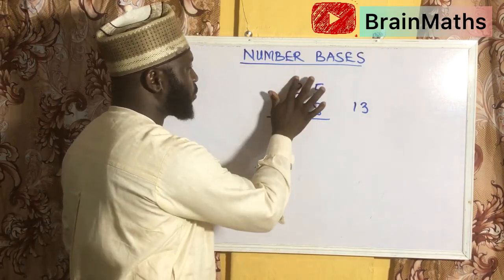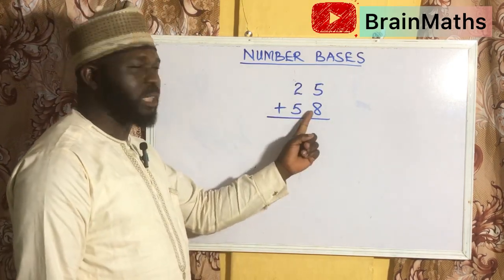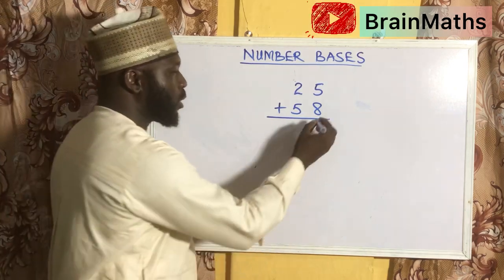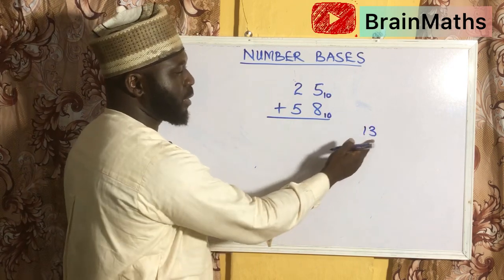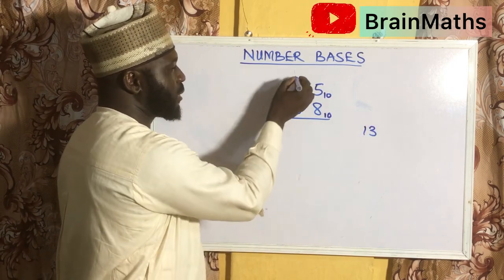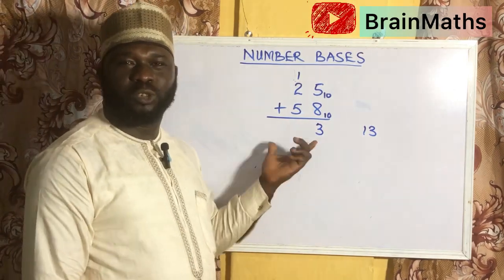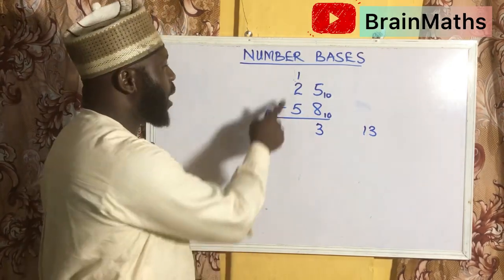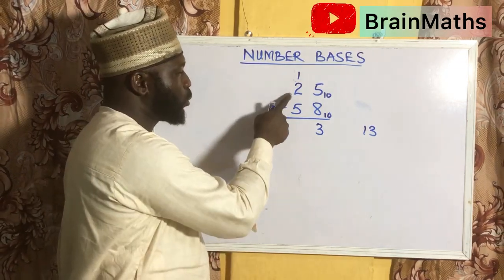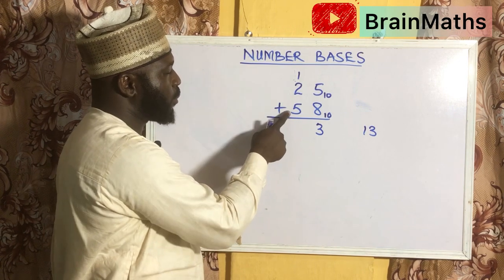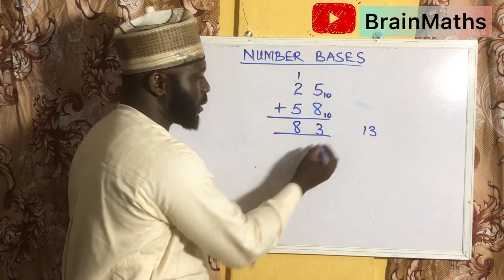That is to tell you that the real addition done here should be 5 plus 8 equals 13. Because this number is in base 10, we are going to see how many 10s we can get in 13 — that is 1 remainder 3. We have been writing the remainder all this while, and the 1 is a bundle which is 10. So 1 plus 2 is 3, 3 plus 5 is 8, giving us 83.